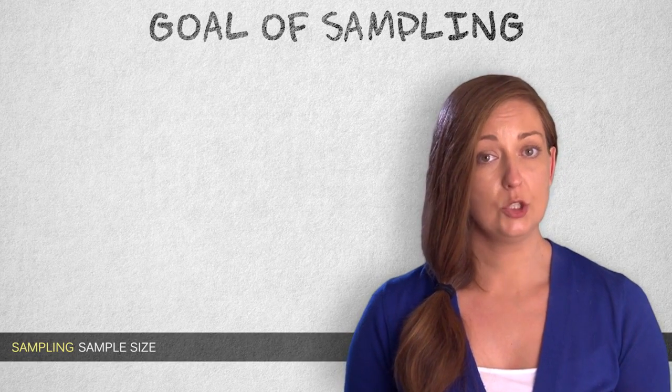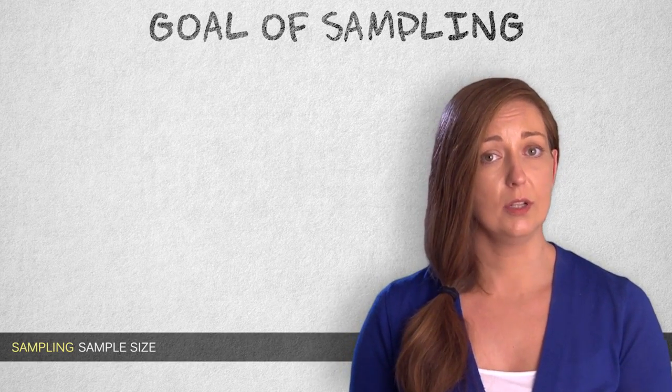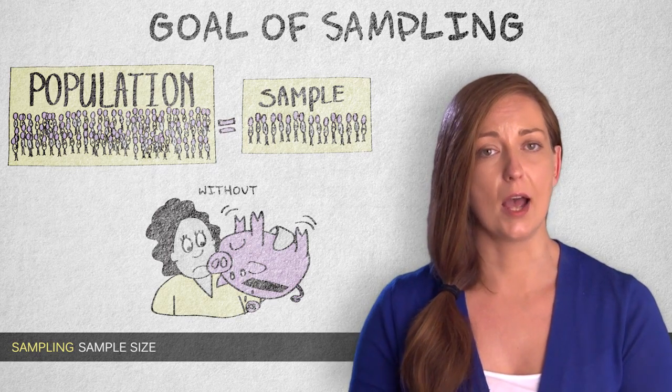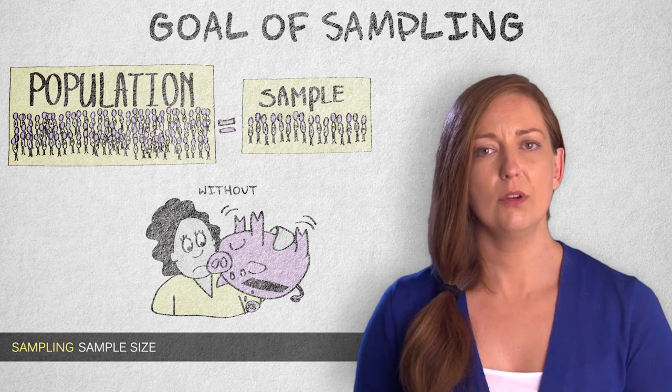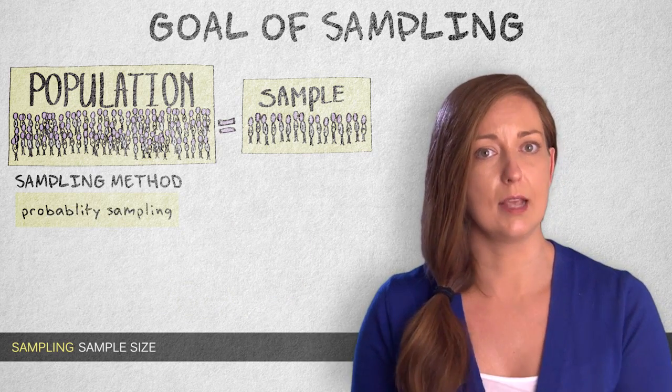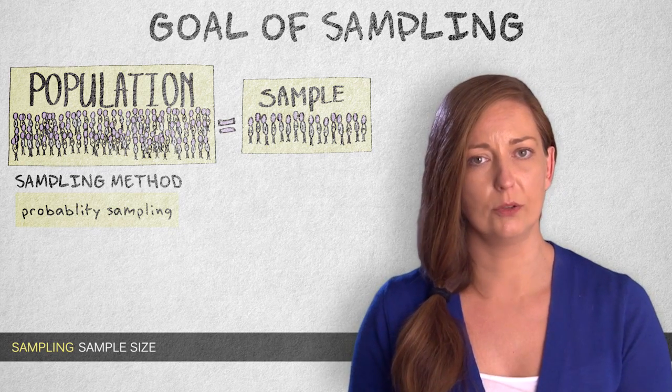The goal of sampling is to obtain the best possible estimate of a population value within the limits of our budget and our time. Suppose we've decided on a sampling method for our study, preferably a probability sampling method if this is at all possible.